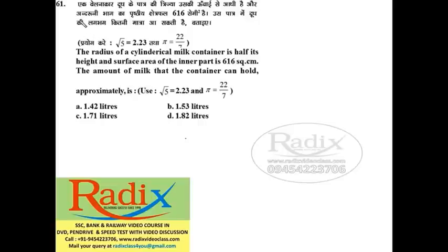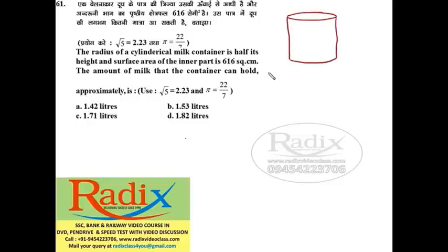Question 61: The radius of a cylindrical milk container is half its height, and the surface area is given. This is a cylindrical can containing milk. If radius is r, then height = 2r.